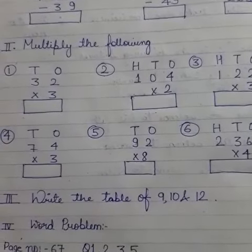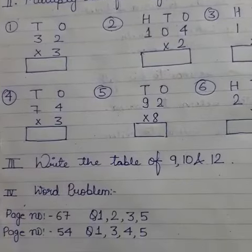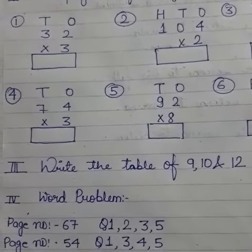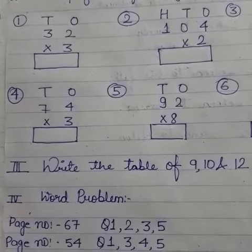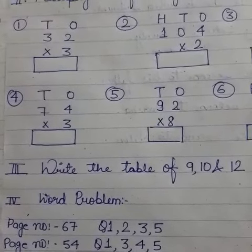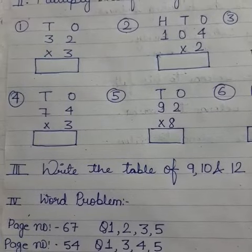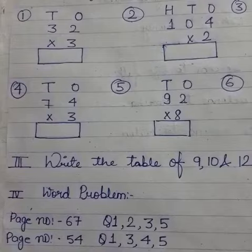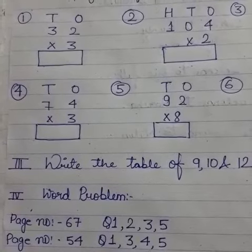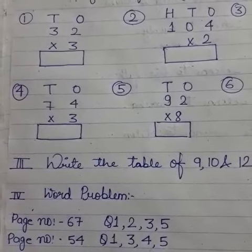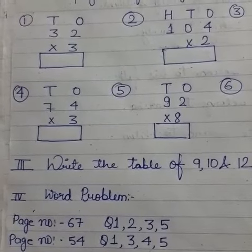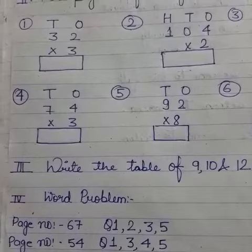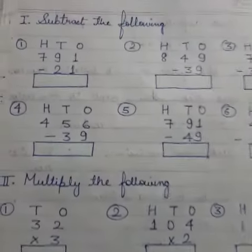Your fourth question is word problems related to addition and subtraction. Page number 67, question numbers 1, 2, 3, and 5. And page number 54, question numbers 1, 3, 4, and 5. Just practice these word problems in your rough notebook with statements. These are your questions.